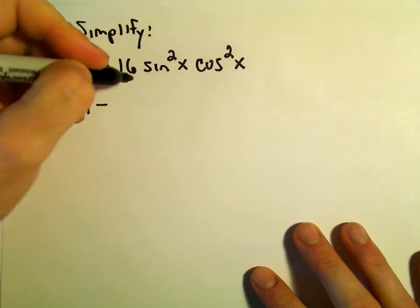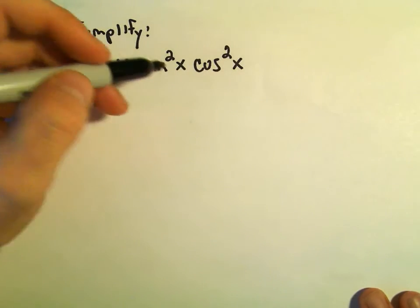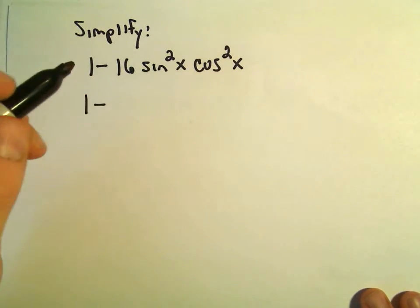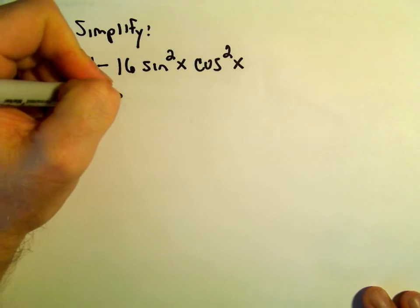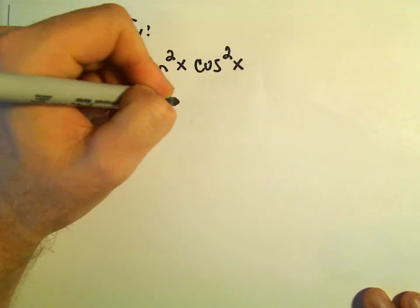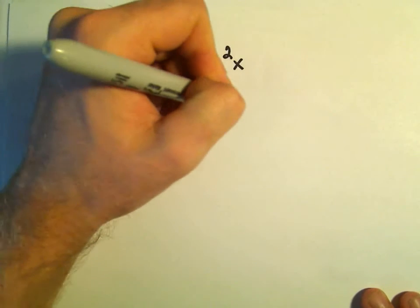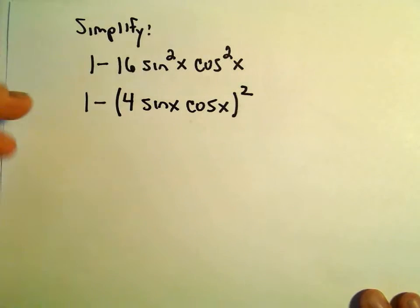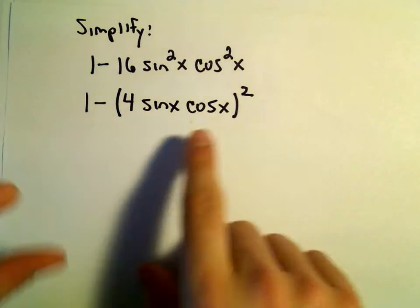And all I'm really going to do is just rewrite this expression sine squared x times cosine squared x a little differently. So the first thing I'm going to notice is really we could write this as 4 times sine x times cosine x quantity squared.